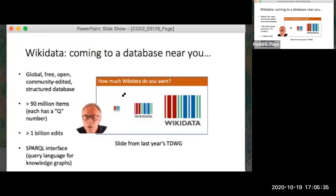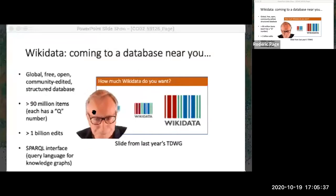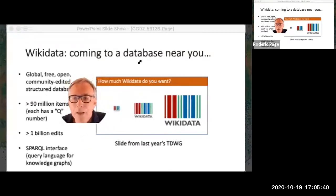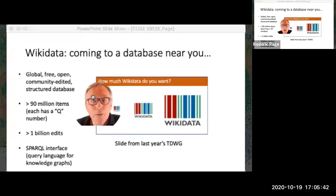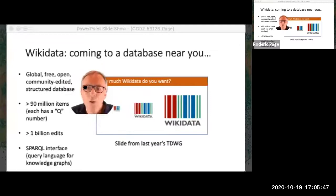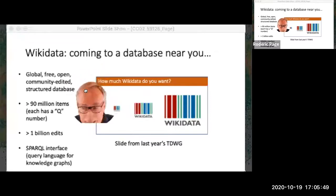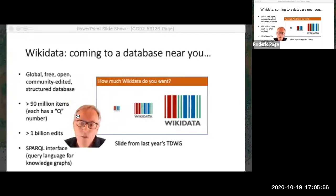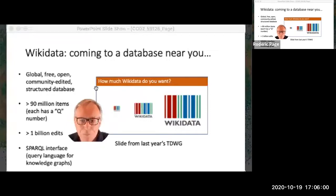Another approach is to go global. In this case we're looking at something like Wikidata. If you haven't come across Wikidata, it is one of the Wiki projects — a huge knowledge graph that is free, open, and anybody can edit. It has about 90 million items, all with a characteristic Q-number, and something like a billion edits have been made to it.